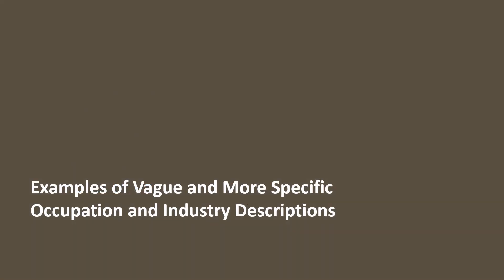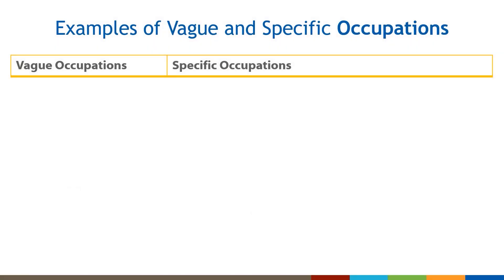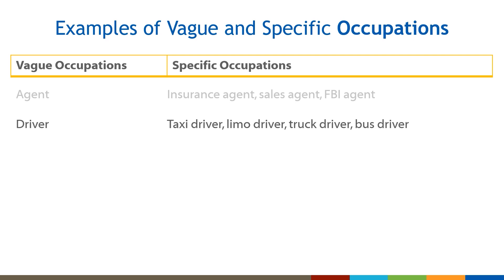Here are some examples of vague versus specific documentation of occupation and industry. Sometimes you need to ask follow-up questions to get a more specific occupation. A response of 'agent' is very broad — you may need to ask, 'What type of agent are you?' For example, an insurance agent or a sales agent. The same with 'driver' — ask them to be more specific: are they a taxi driver, limo driver, truck driver, or bus driver?